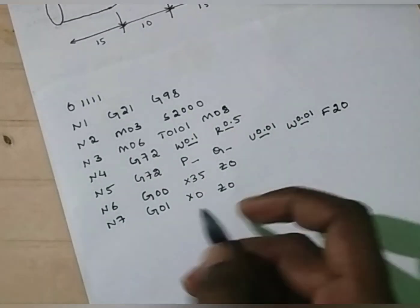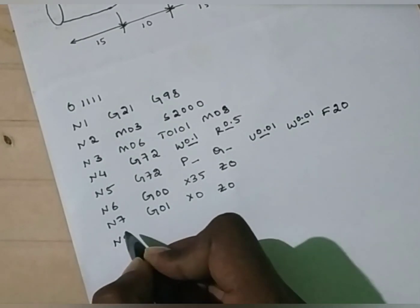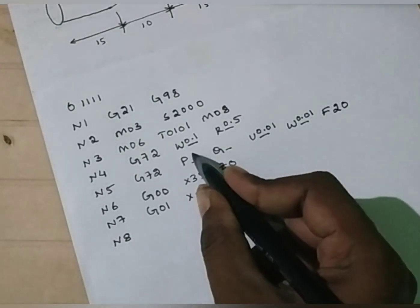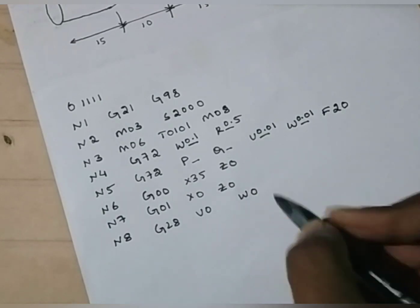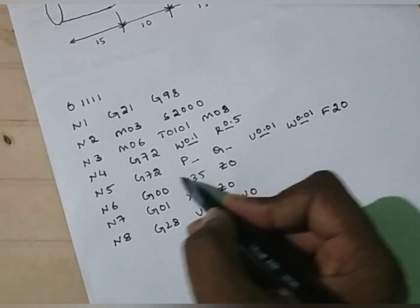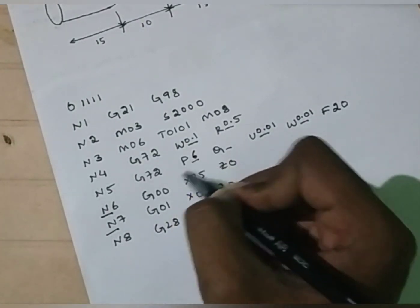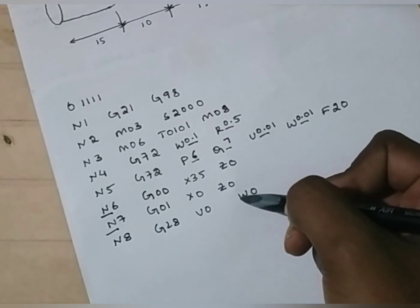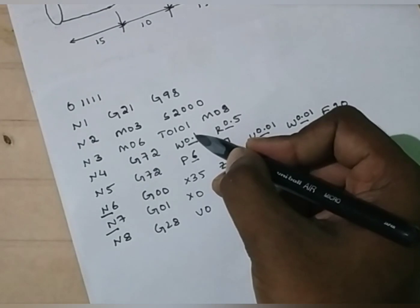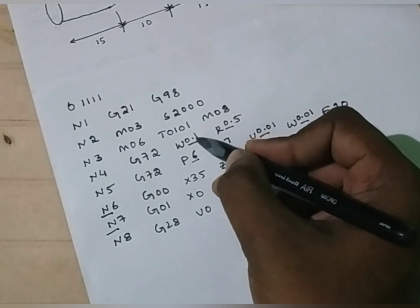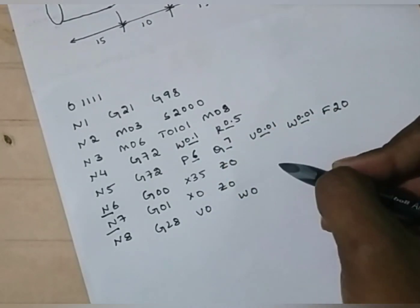After facing operation, we have to do step turning. Before that, we have to change the tool. Before changing the tool, send the facing tool to its reference point. Use G28, U0, W0. Now you can observe: the facing operation started at block 6 and ended at block 7. Therefore, P value is 6 and Q value is 7. The amount of material to remove is based on depth of cut. If you want to remove extra material, you can give that value at W — W indicates the depth of cut. Now the facing operation is over.